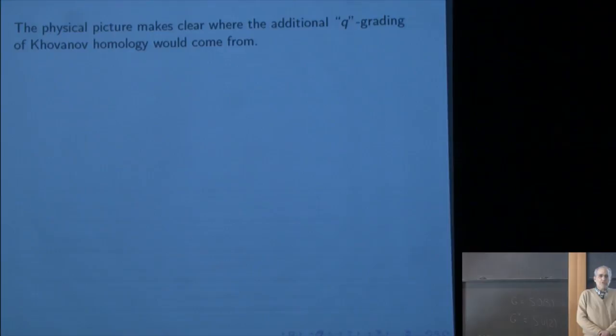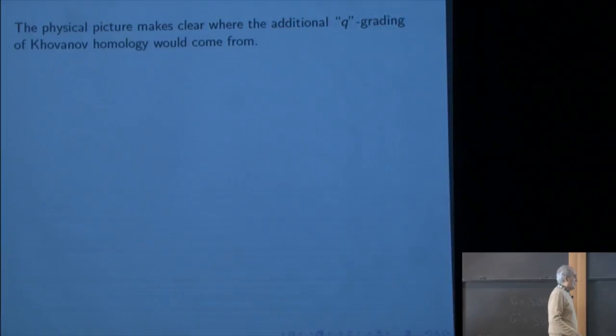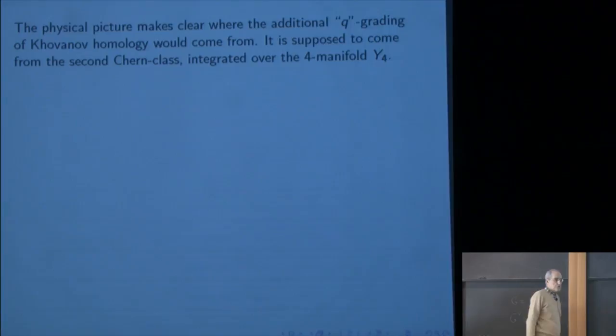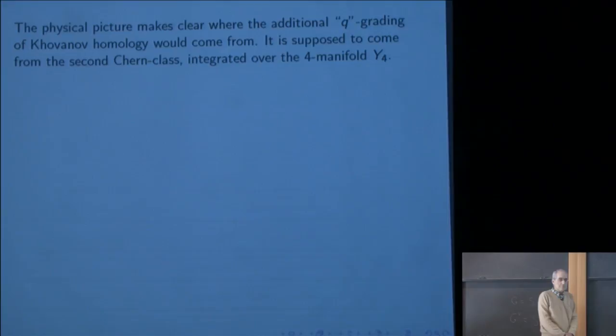The second grading of Khovanov homology — the Q grading that survives in the decategorified theory and leads to the Jones polynomial — is supposed to come from the second Chern class integrated over the four-manifold Y^4. In the presence of the singularity along S, there simply is no integer invariant corresponding to the second Chern class for topological reasons. The physical picture tells us what we have to do to get the Q grading: our four-manifold should be a manifold with boundary, and the knot should be placed in its boundary.